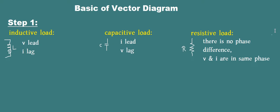Hello and welcome to this tutorial on vector diagrams. We will start from the basics. In Step 1, for a purely inductive load, V leads and I lags. For a purely capacitive load, I leads and V lags. For a resistive load, there is no phase difference as V and I are in the same phase.